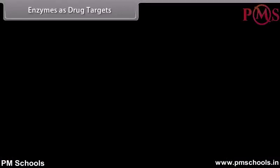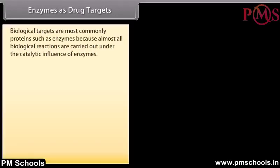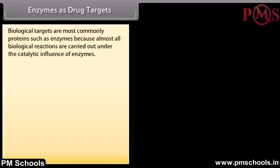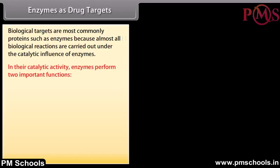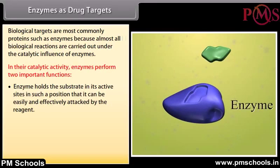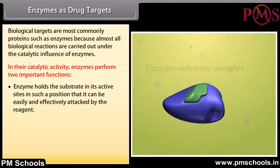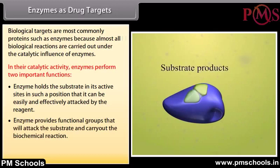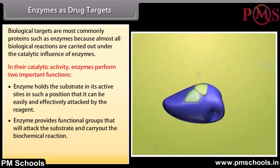Enzymes as drug targets: Biological targets are most commonly proteins such as enzymes, because almost all biological reactions are carried out under the catalytic influence of enzymes. In their catalytic activity, enzymes perform two important functions: they hold the substrate at their active sites in such a position that it can be easily and effectively attacked by the reagent; and they provide functional groups that will attack the substrate and carry out the biochemical reaction. Drugs can either increase or decrease the rate of enzymatically mediated reactions.